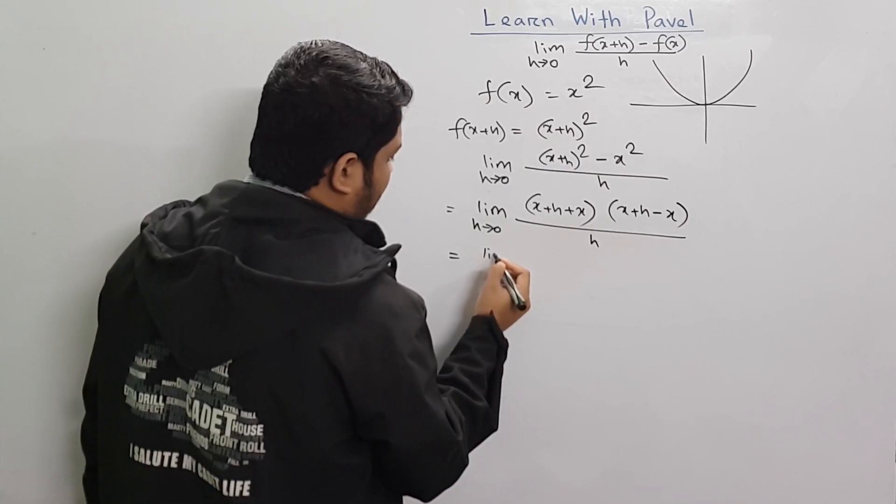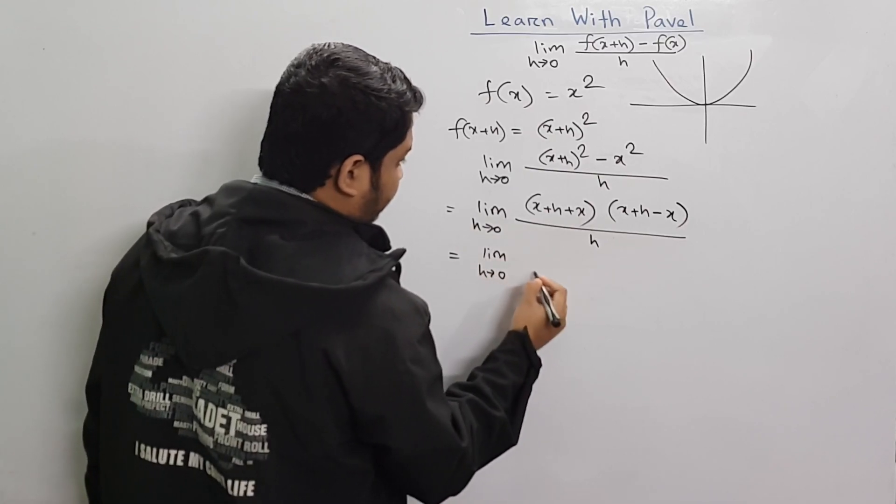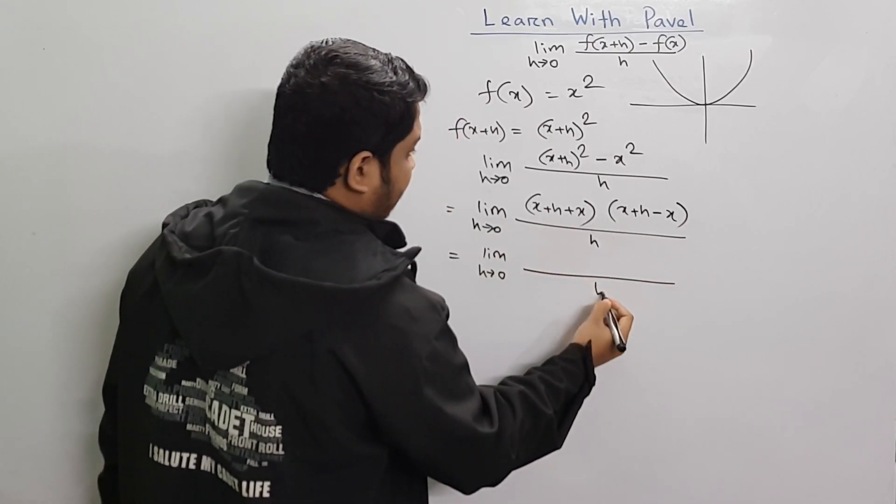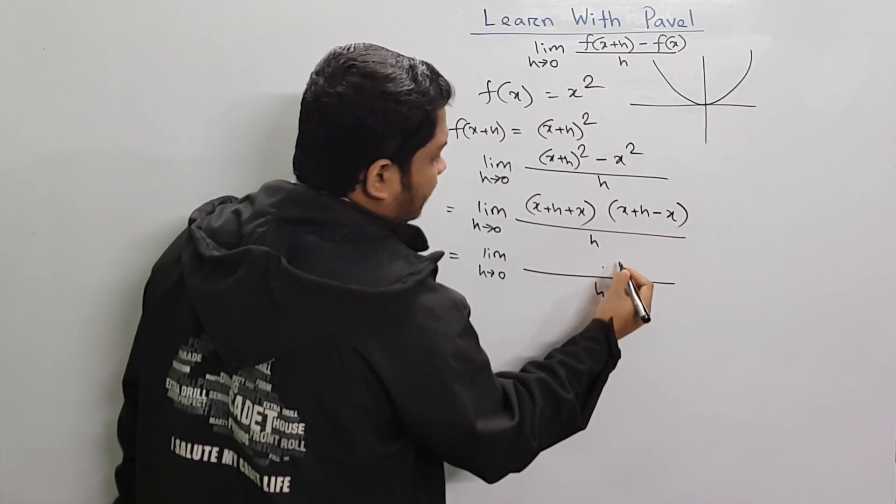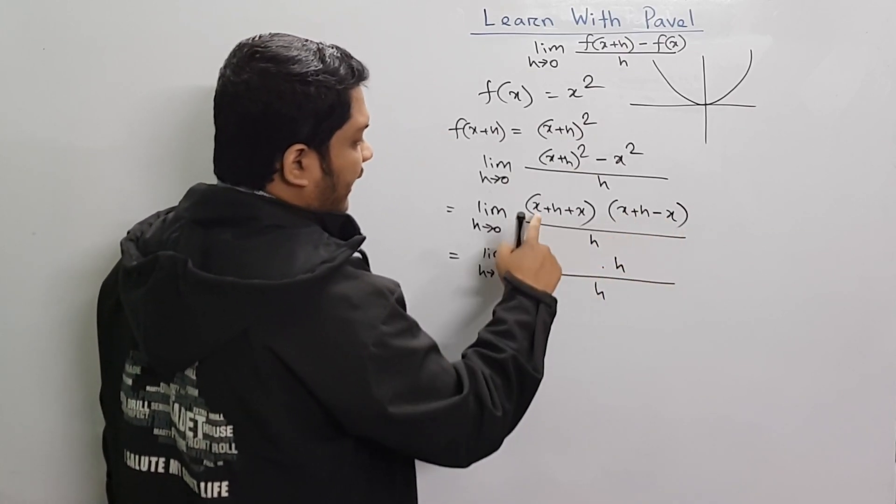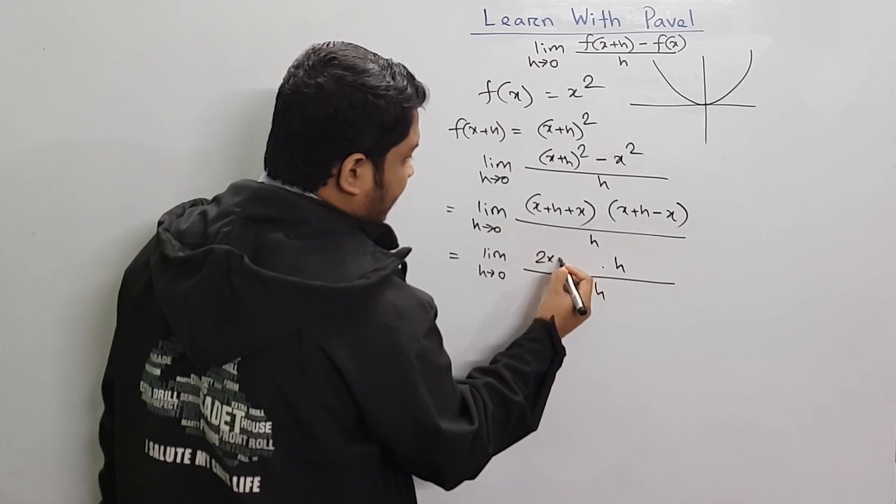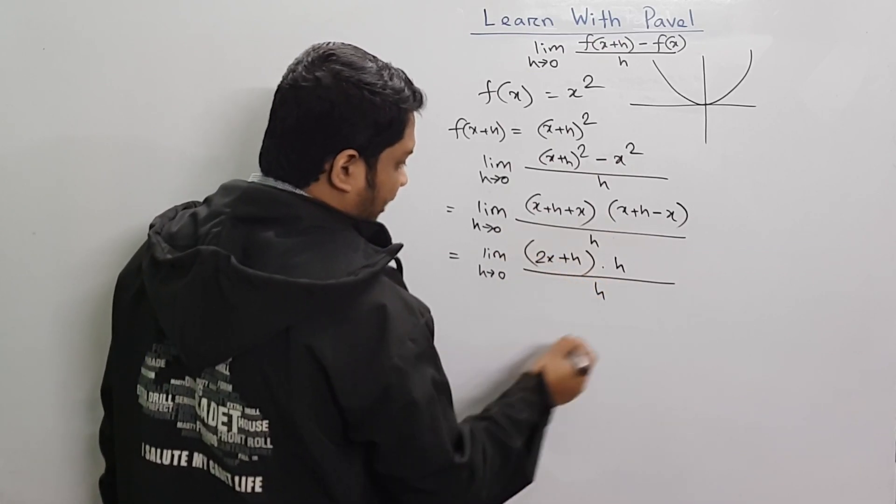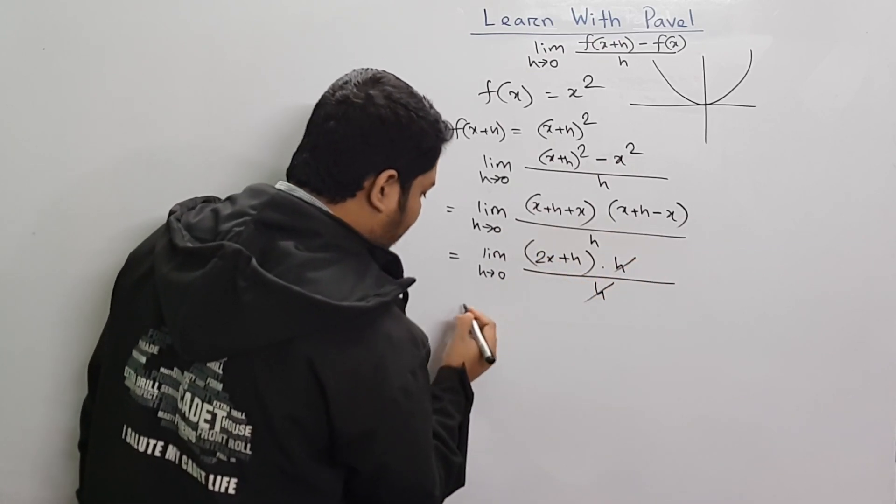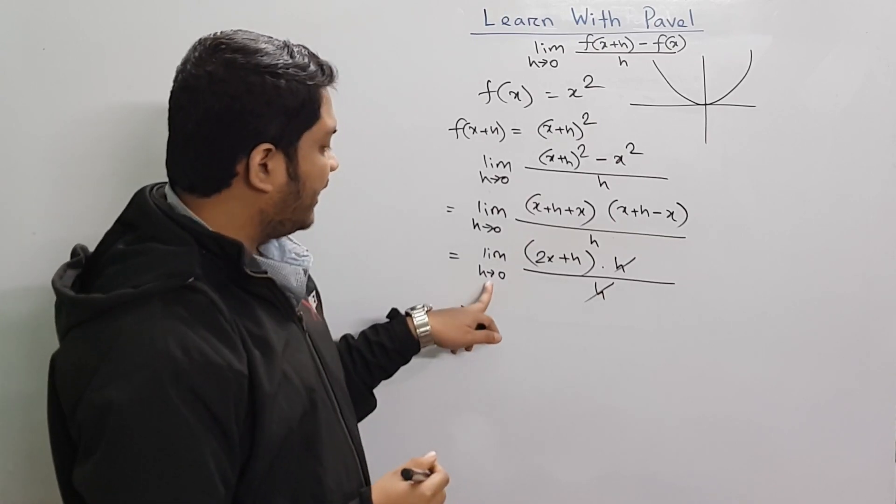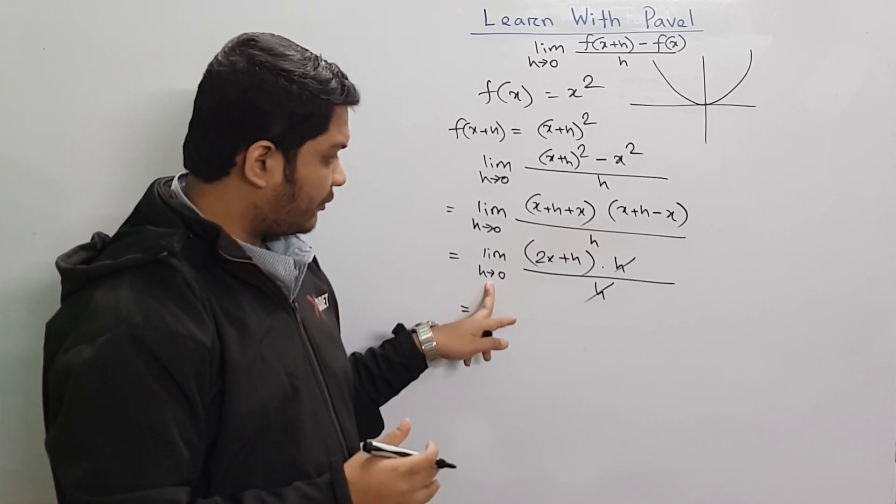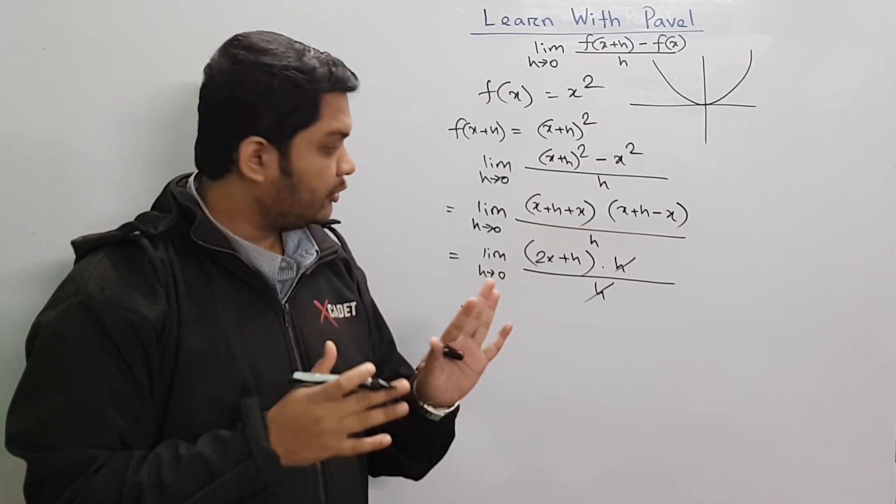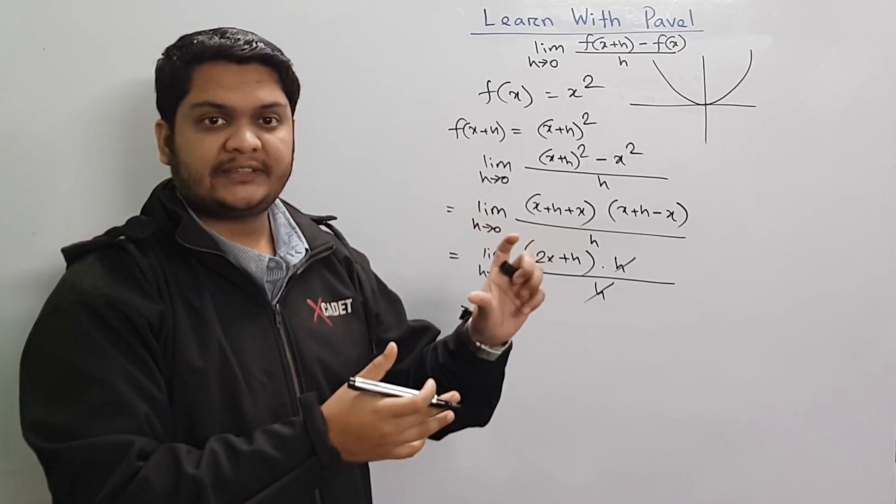Let's take a look at limit h approaches 0. This is x plus x plus h. Now, h among h cancels. So limit h approaches 0, let's take a look at the limit.